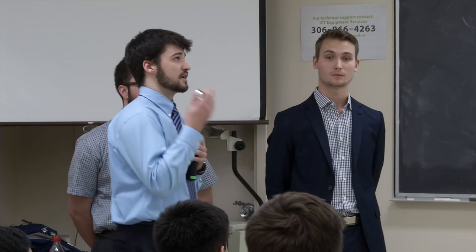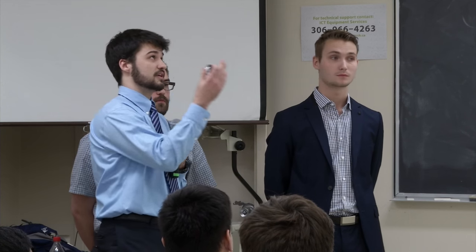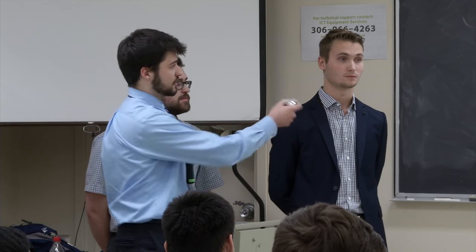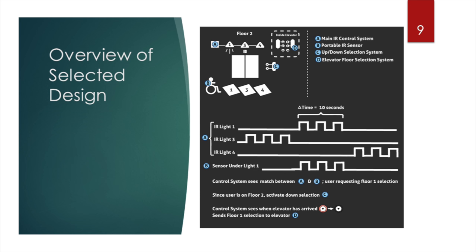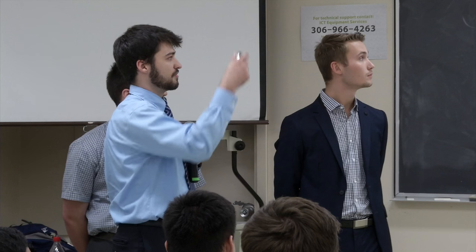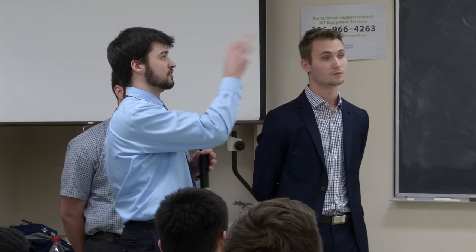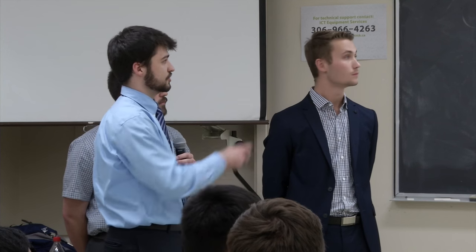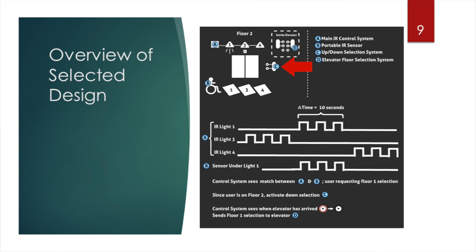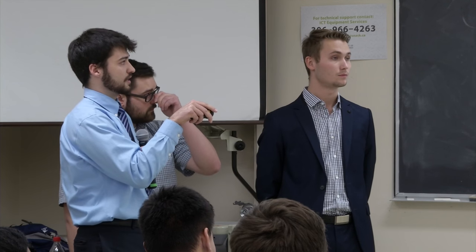Our infrared solution uses IR lights in the roof and a sensor on the user that detects the light. There are three IR lights on the roof, each shining onto a specific marked portion of the floor corresponding to a floor number. As seen here, this individual is in the floor two zone, with floor one, floor three, and floor four spots marked on the ground. As the user moves under a light, the sensor detects it and sends a signal to our server indicating which floor they want. That signal is then relayed to the up or down button and into the elevator to select the floor.